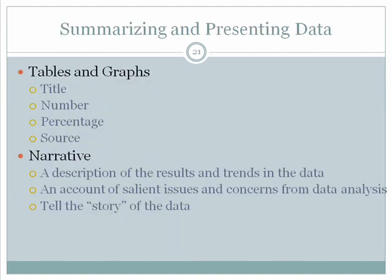Once you have data collected and analyzed, there is a need to make sense of the results by summarizing and presenting them in meaningful units. In the social sciences, this is typically done through the use of tables and graphs. With tables and graphs, you want to include a title, the number of observations or respondents, the percentage represented by observations or category, and the source of the data. Just as important are narratives, which often accompany tables or graphs. With narratives, you typically want to include a description of the results and trends in the data, and an account of salient issues and concerns from data analysis. With the narrative, the goal is to tell the story of the data.